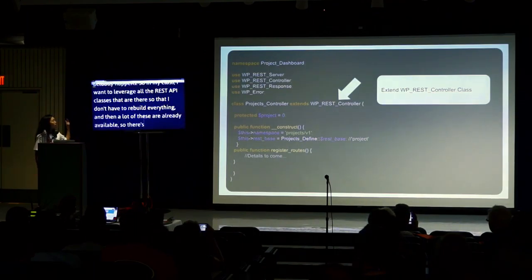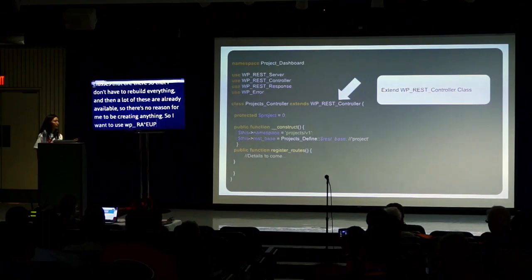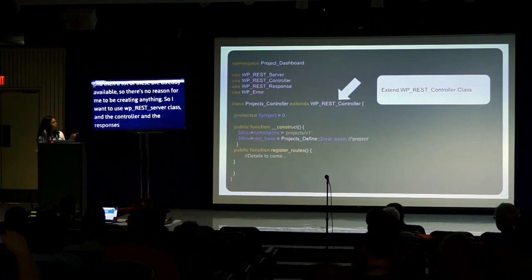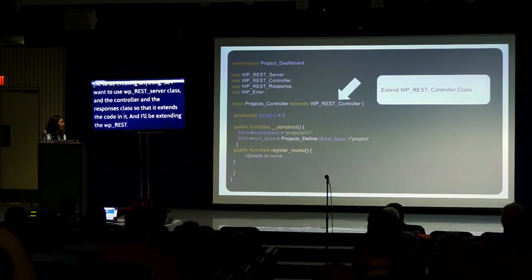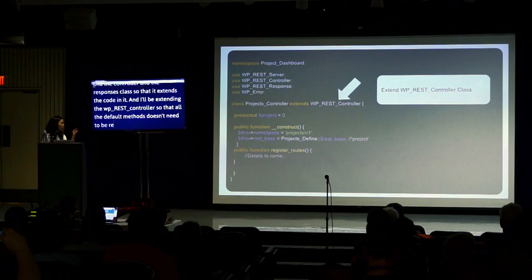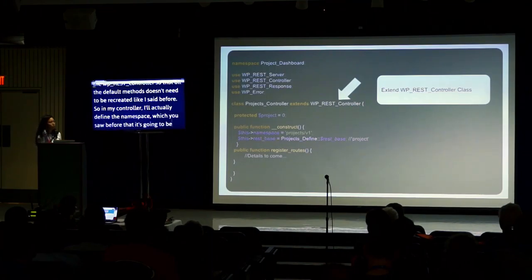In my class, I want to leverage all the available REST API classes so I don't have to rebuild everything. I'll use the WP_REST_Server class, the controller class, the response class, and also the error class so it sends the appropriate status code. I'll extend the WP_REST_Controller so that default methods don't need to be recreated.